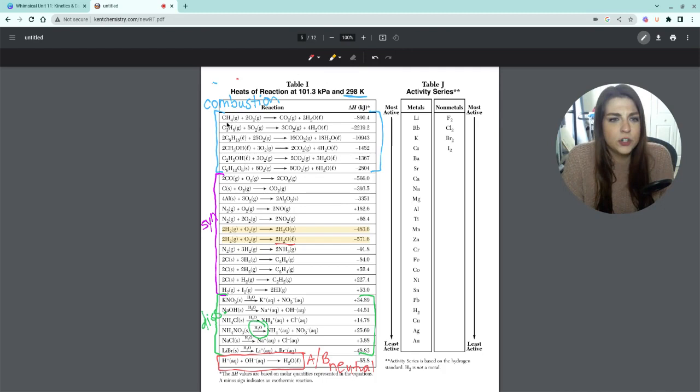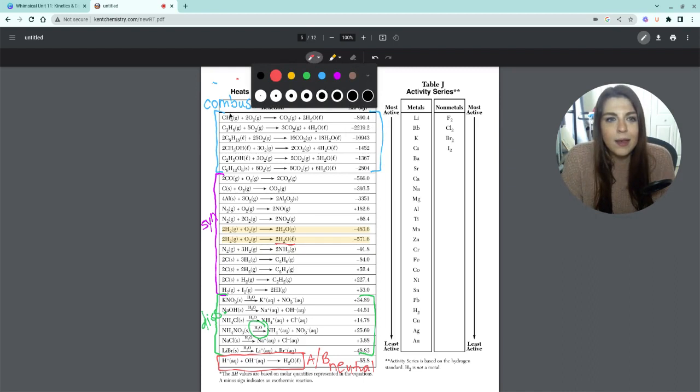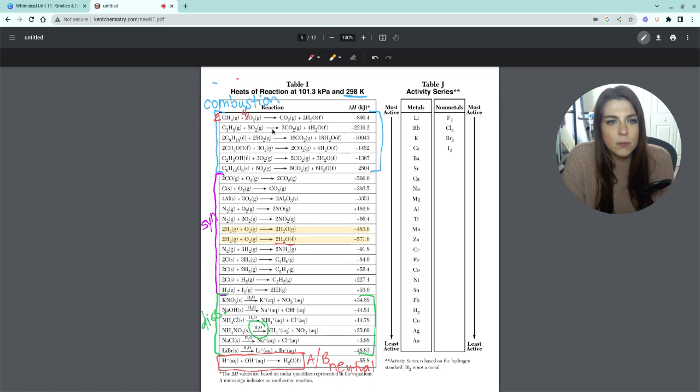So in this first reaction here, we have methane combusting in oxygen. And that is a negative 890 kilojoules. But let's just say we were burning a lot of methane. If we would put a 2 here, that means this 2 would have to become a 4. We would put a 2 right there, and that 2 would become a 4. We've doubled the entire reaction. That means that this negative 890 is going to be like negative 1700, whatever it comes out to be. So that's really what we're talking about here.